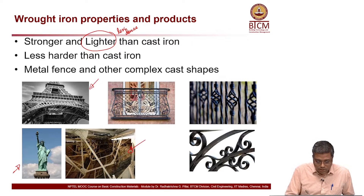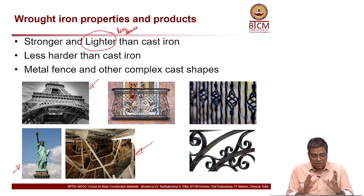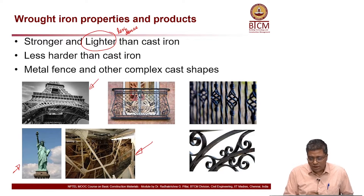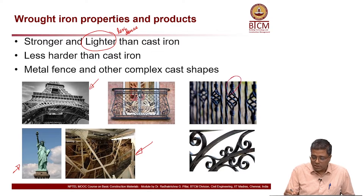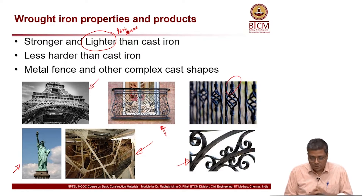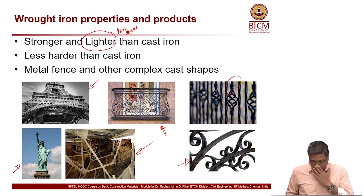This is just an image — an inside view of the frame inside the Statue of Liberty. You can also see these different aesthetically pleasing shapes for various applications in buildings, fences, etc. Wrought iron is widely used.